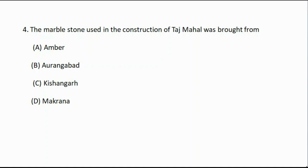Question number four: The marble stone used in the construction of the Taj Mahal was brought from — option A: Umba, option B: Aurangabad, option C: Kishanganj, option D: Makrana. The correct answer is option D, Makrana.